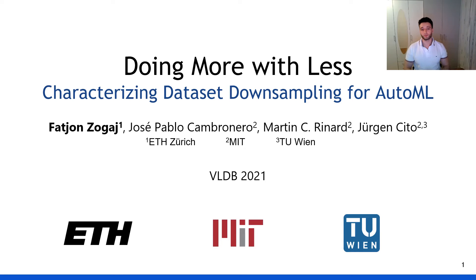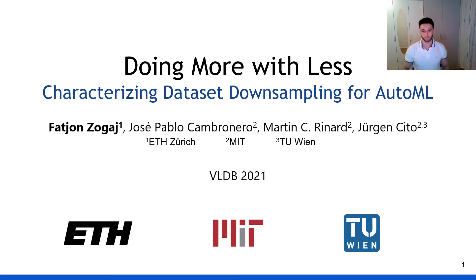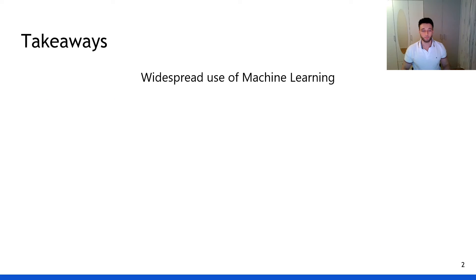Hello everyone, my name is Fatian Zorger, and in this talk I want to present our extensive experimental study on the effects of downsampling for automated machine learning. Before I go into detail about our findings, I want to provide a brief summary of our key insights.